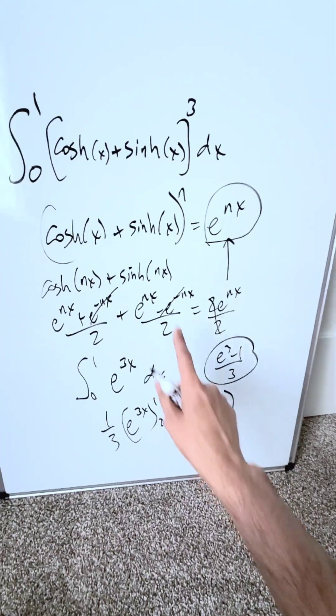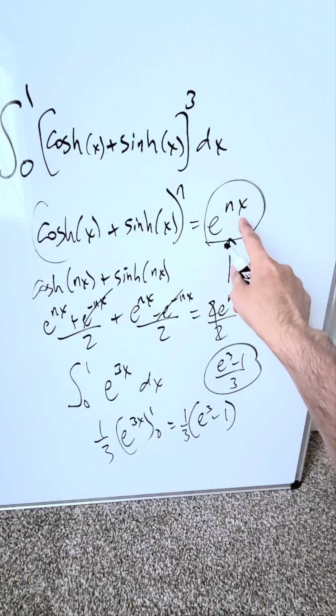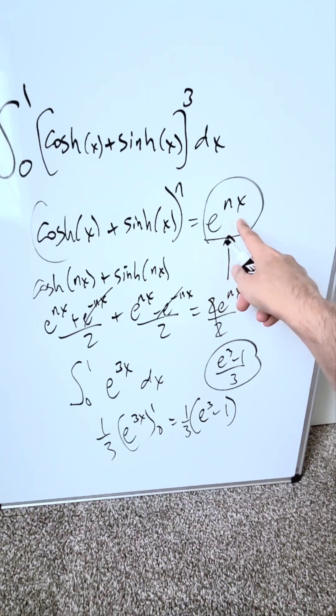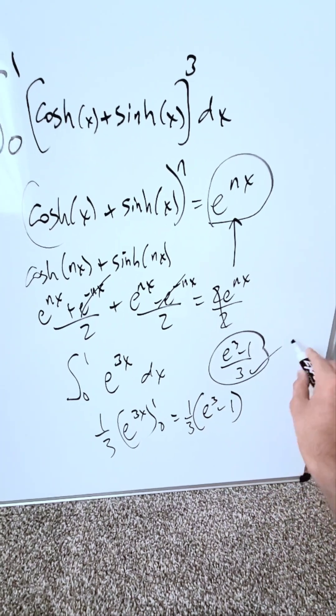It will be correct. Keep in mind, this fundamental hyperbolic identity helps you through. When you're looking at something like this, it becomes e to the power of nx and this is very easy to integrate. e cubed minus 1 over 3 is the perfect answer and I'm happy with it.